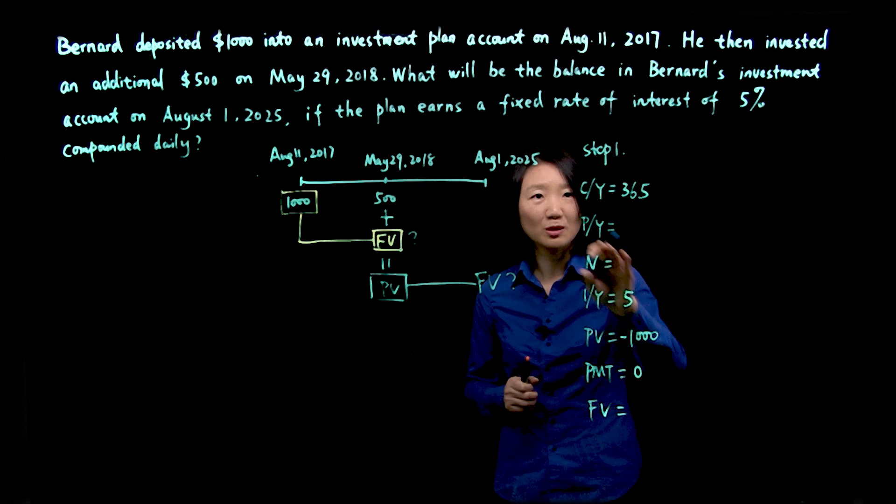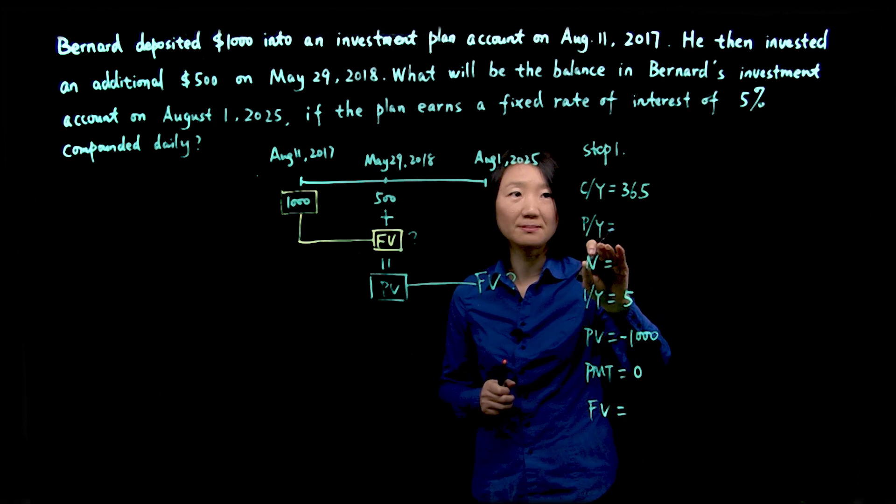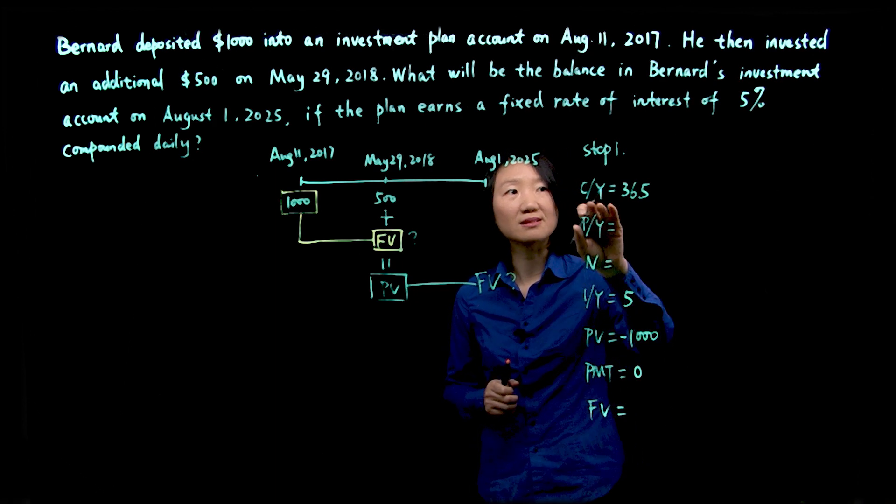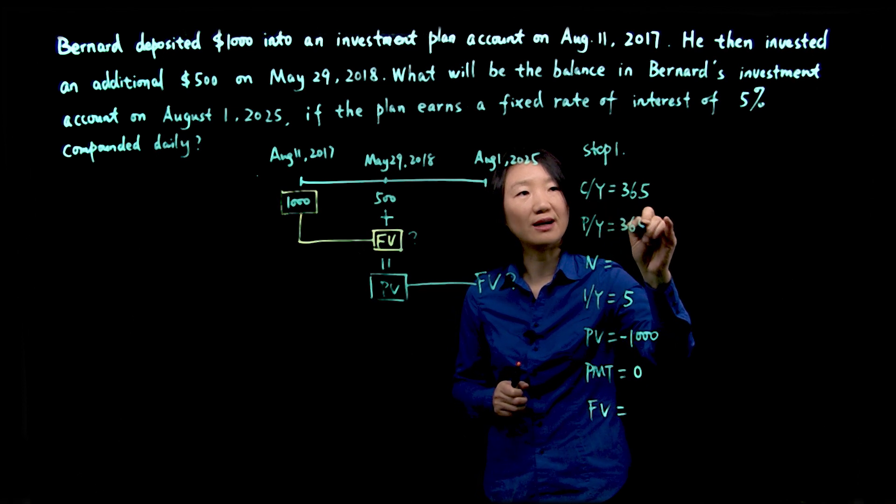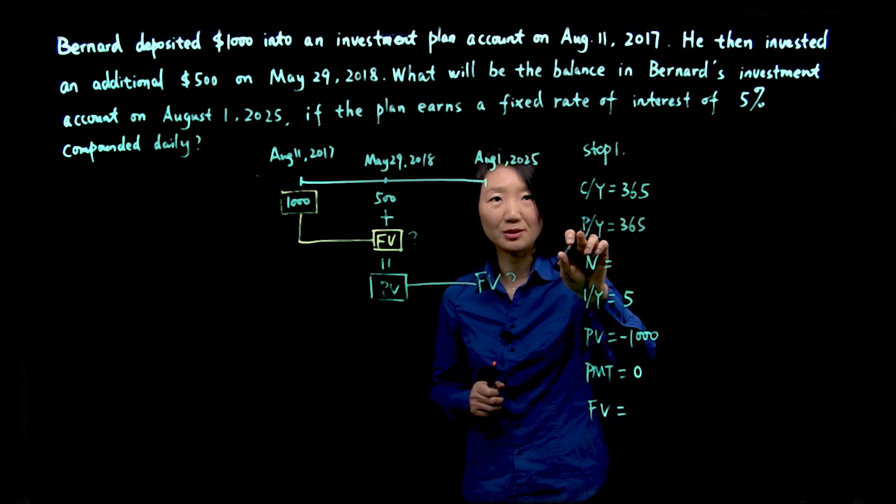And in this case, we're talking about payment per year. We'll just use the same number as CY, 365, because we do not have periodic payments.